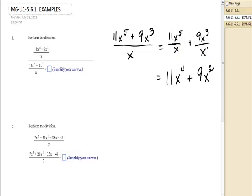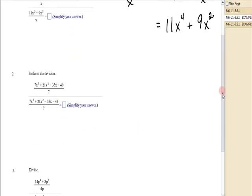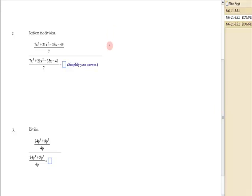From now on, when I write down the problem, I'm going to go ahead and break it into the individual fractions. So the next one is 7x to the 3rd over 7 plus 21x to the 2nd over 7 minus 35x over 7 minus 49 over 7. I'm dividing by the monomial, which happens to be a constant in this case, of 7.